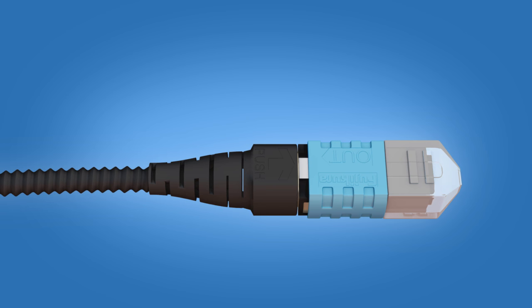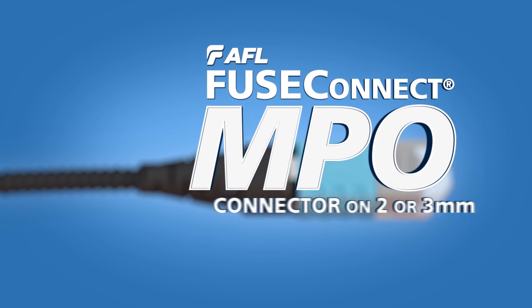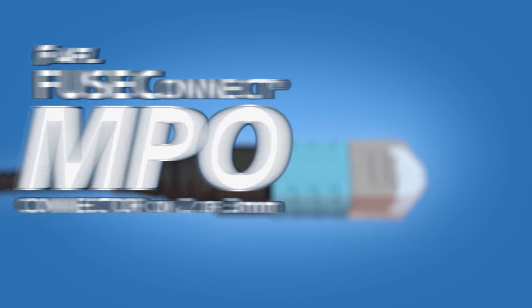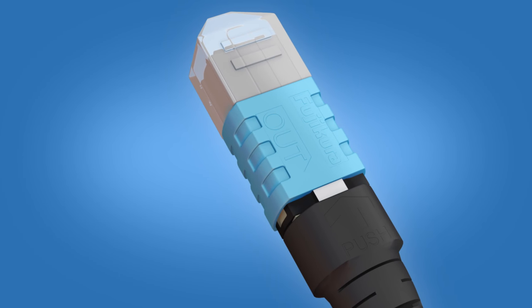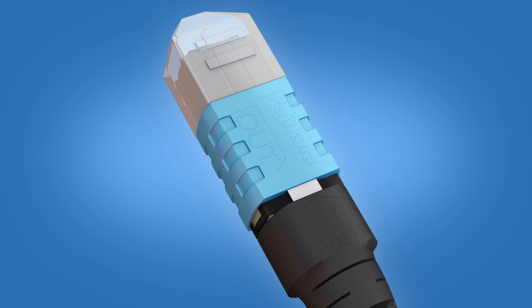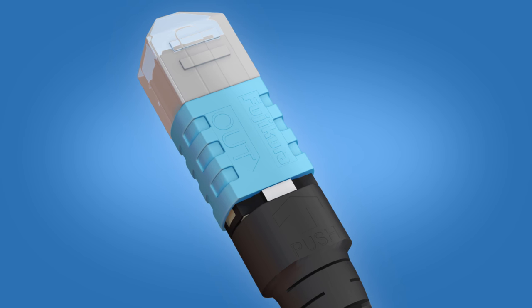This video provides termination instructions for AFL Fuse Connect MPO connectors on 2mm and 3mm cordage. These step-by-step instructions demonstrate the termination of a Fuse Connect MPO connector on 3mm cordage using a Fujikora 70R Fusion Splicer.